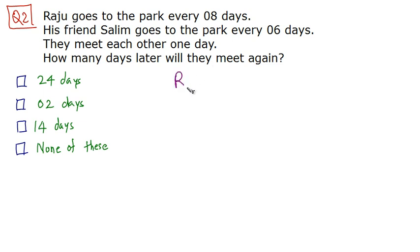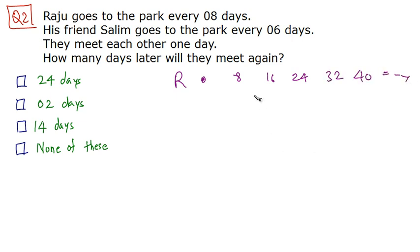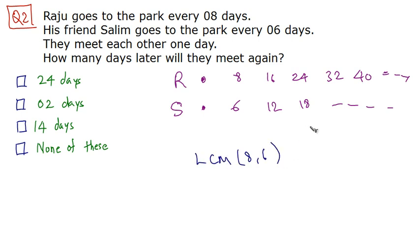Raju goes to the park every eight days, so taking today as the reference point, he'll come again after 8, 16, 24, 32, 40 days — multiples of 8. Similarly, Salim comes after 6, 12, 18 days and so on — multiples of 6. We need the least common multiple of 8 and 6, which is 24. So our answer is 24 days.